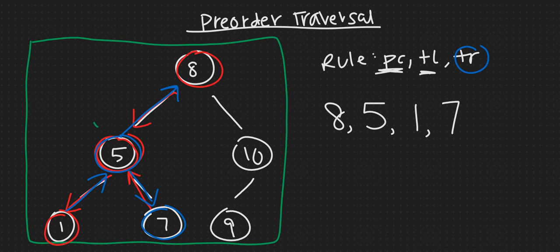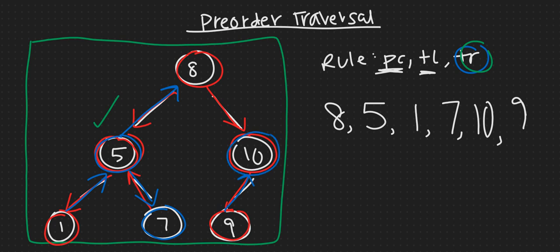Now we've completed this side of the branch — time for traverse right again. We go down this path and get to node ten, print out ten, traverse left first, and then print out nine. Since there is no left or right on nine we go back up to node ten. There's no right there either so we go back up to root eight and now we're done with the right side. We've printed all the numbers inside our tree — this is the pre-order traversal.